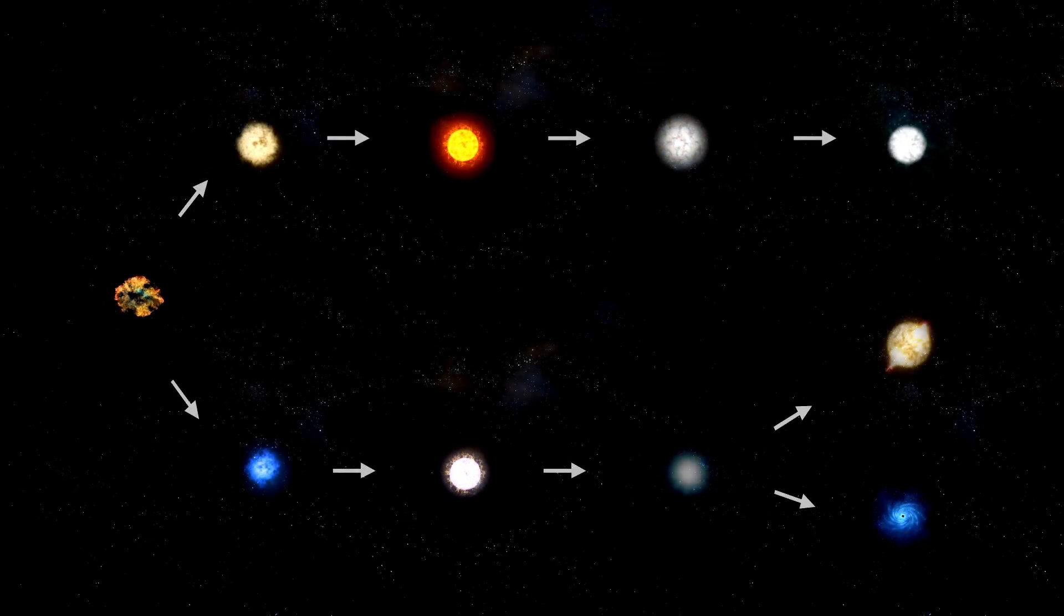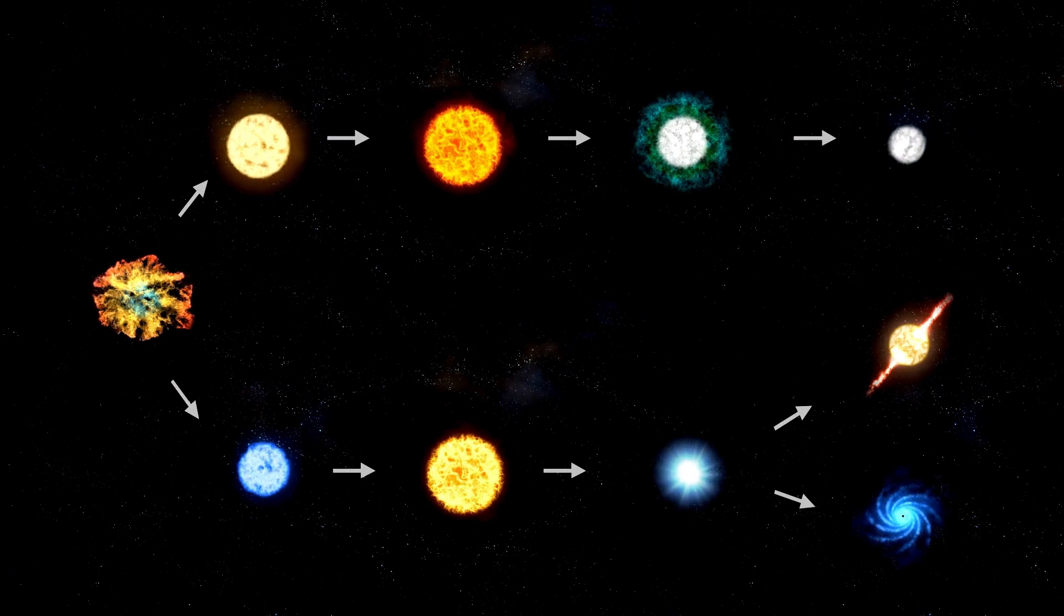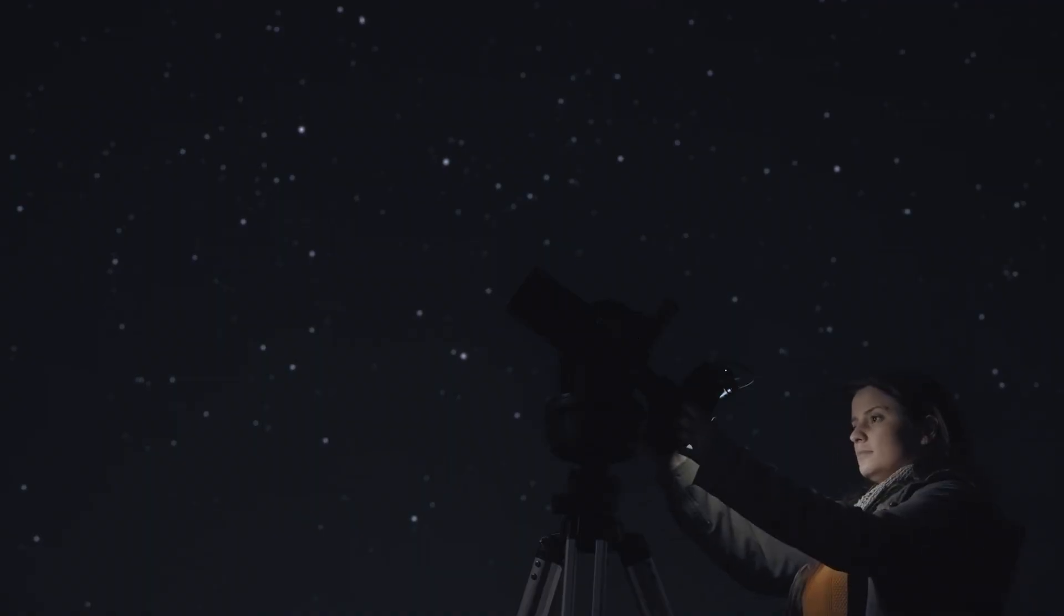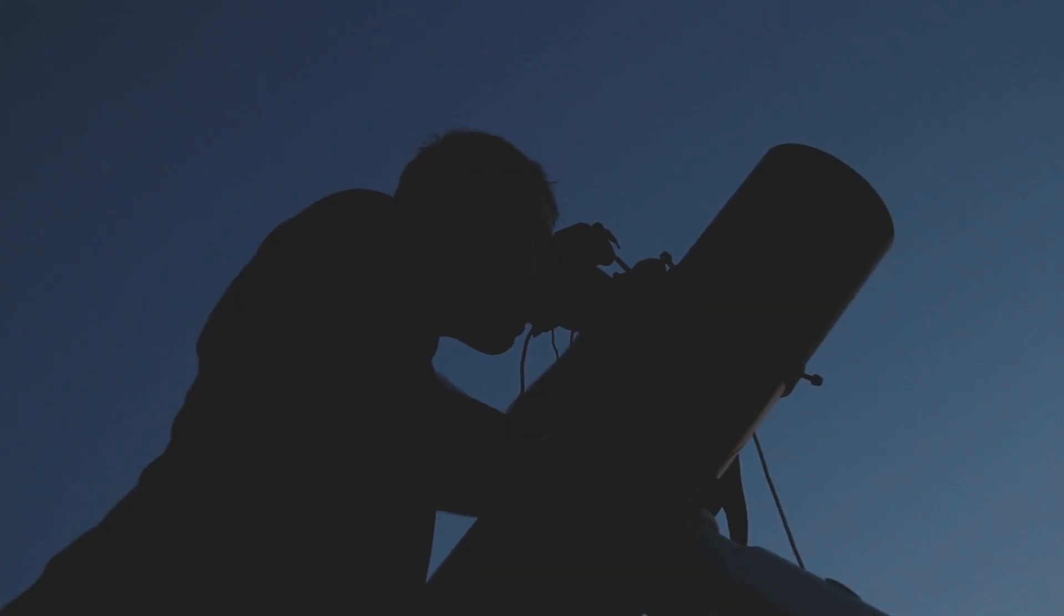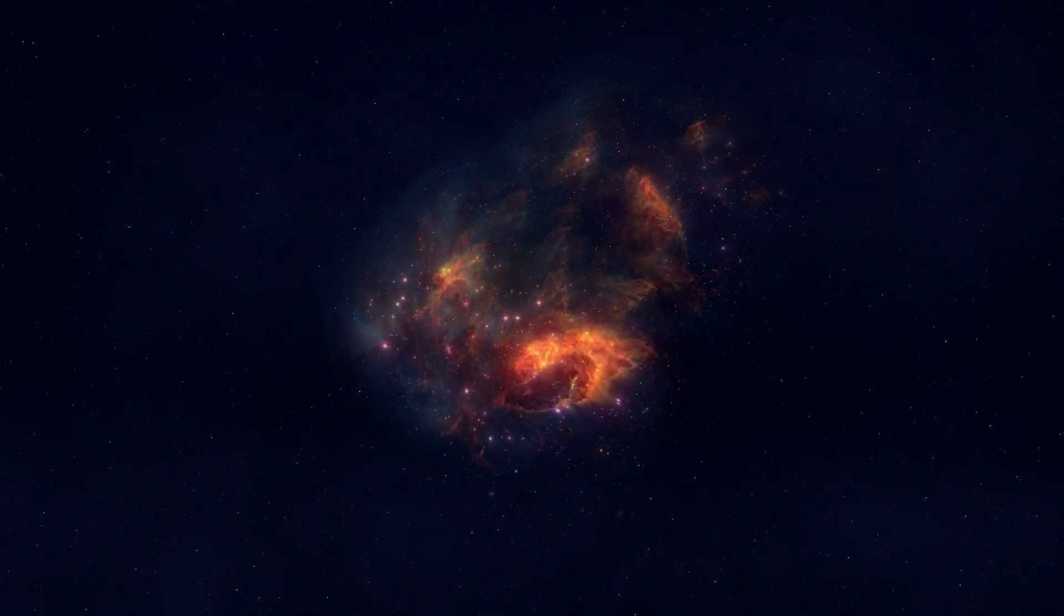A third intriguing theory involves Betelgeuse's magnetic field, a component of the star's nature that remains poorly understood. Some studies suggest that red supergiants may possess highly complex and dynamic magnetic fields that could directly influence how energy travels through the star's layers. Changes in this magnetic structure might trigger sudden shifts in brightness, and the recent luminosity spike could be a manifestation of such magnetic upheaval.